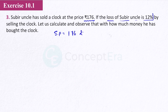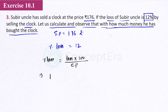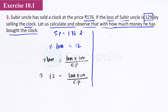If the loss of Subir uncle is 12%, we have percentage loss given as 12%. We need to find the cost price — how much money did he buy the clock for? We use another method: assume cost price is x. The percentage given is based on cost price. If the cost price is x and there is a 12% loss, what will the selling price be?